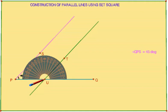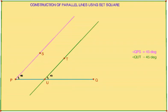Now measure the angle at U which will be equal to 45 degrees. Therefore, angle QUT is equal to 45 degrees.